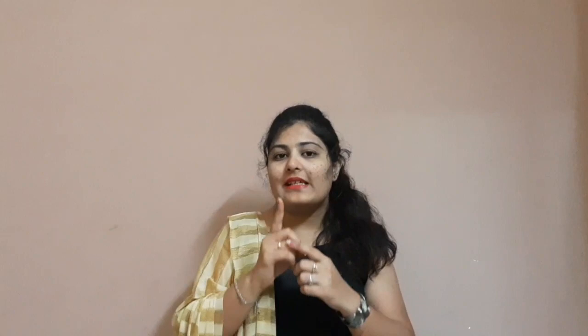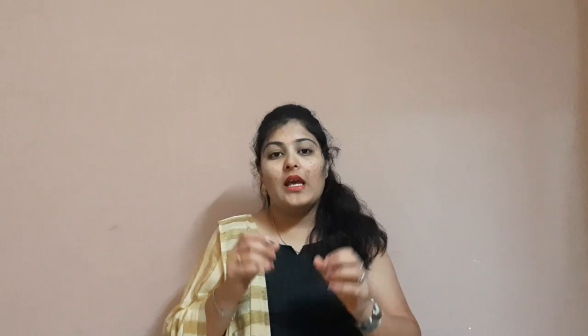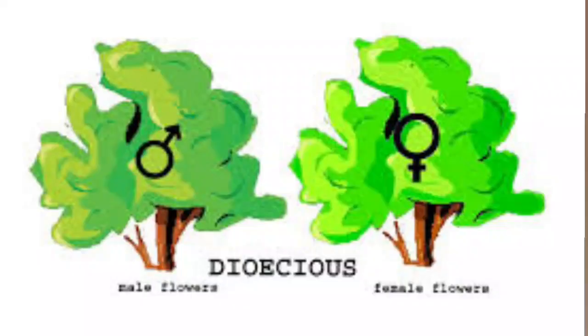In plants, the flower which is formed on one single plant or one single individual is called a bisexual flower. Whereas if the flowers are formed on two different individual plants, it is called a unisexual flower. If the flower is formed on one single individual it is monoecious, and if it occurs on different individuals it is called dioecious.